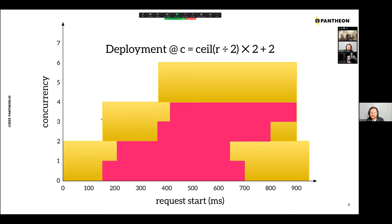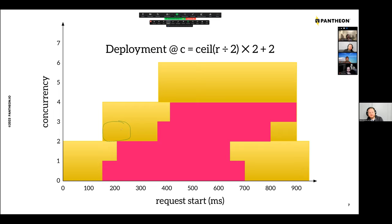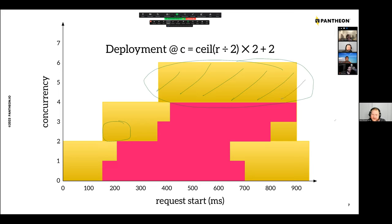What would be really bad is if a request arrives before the additional resources have spun up — there's a lead time. If traffic comes too quickly and you can't handle cold starts fast enough, you end up with extra provisioned capacity you never even use. You're paying for that container even though it's never actually being used. This is what we're trying to avoid at Pantheon — we're trying to find ways to be more efficient with scaling.